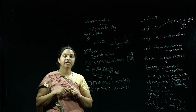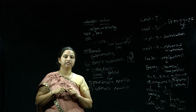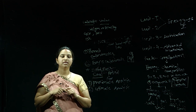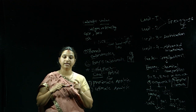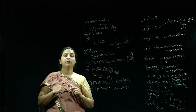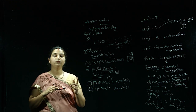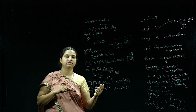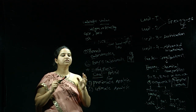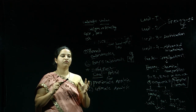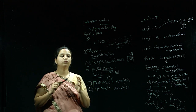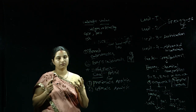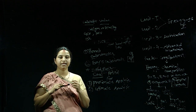Ultimate analysis is the analysis in which we find out the percentage of carbon, hydrogen, sulfur, nitrogen, and oxygen. On the basis of these findings we are able to conclude whether the coal is of good quality or not.